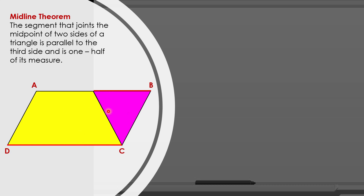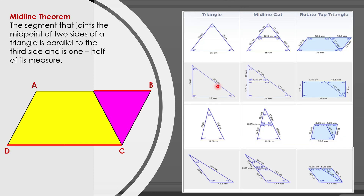This is also applicable if you draw different kinds of triangles — like isosceles, right, and scalene triangles. Again, if you cut the midline and rotate the top part of our triangle, you form different kinds of parallelograms. So that is how we prove the midline theorem inductively.